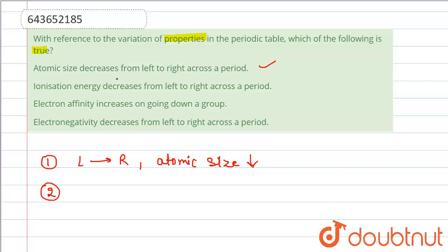Moving to our second statement, which is saying that ionization energy decreases from left to right across a period. Ionization energy is considered a measure of the tendency of an atom or ion to surrender an electron — the greater the ionization energy, the more difficult it is to remove an electron. Ionization energy actually increases from left to right.